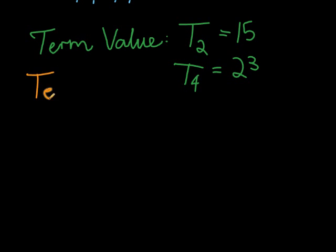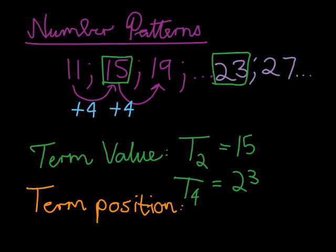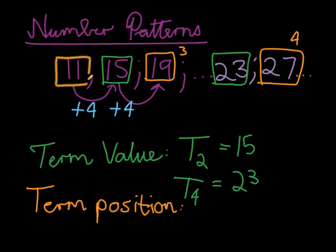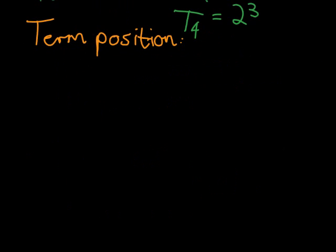Now let's define term position. Term position is just the position at which we find each term. For example, 19 is in the third position, 27 is fourth, and 11 was first. We can also call this the term number.